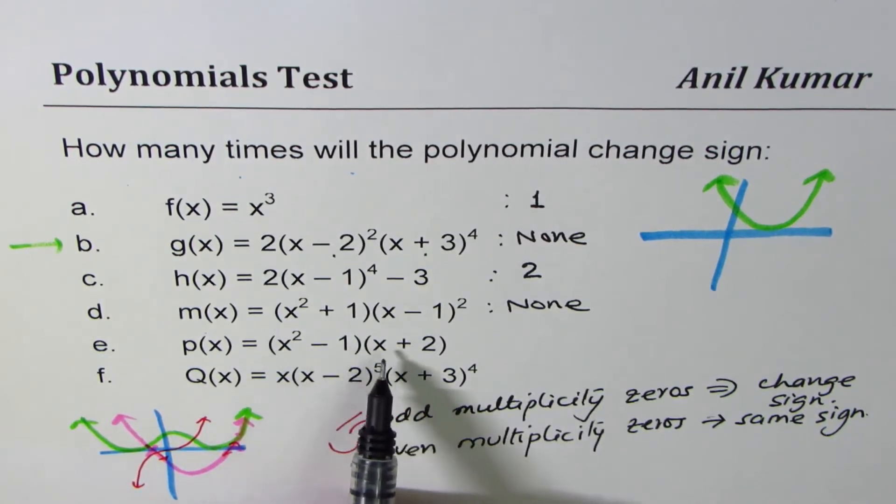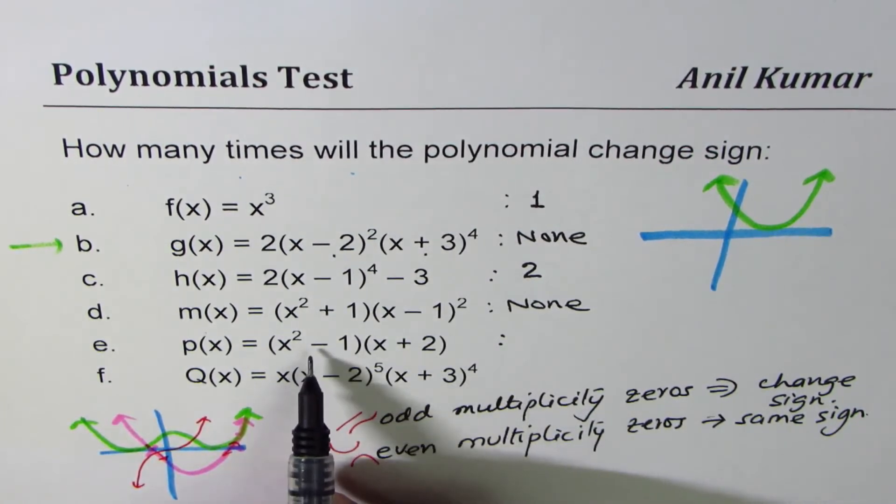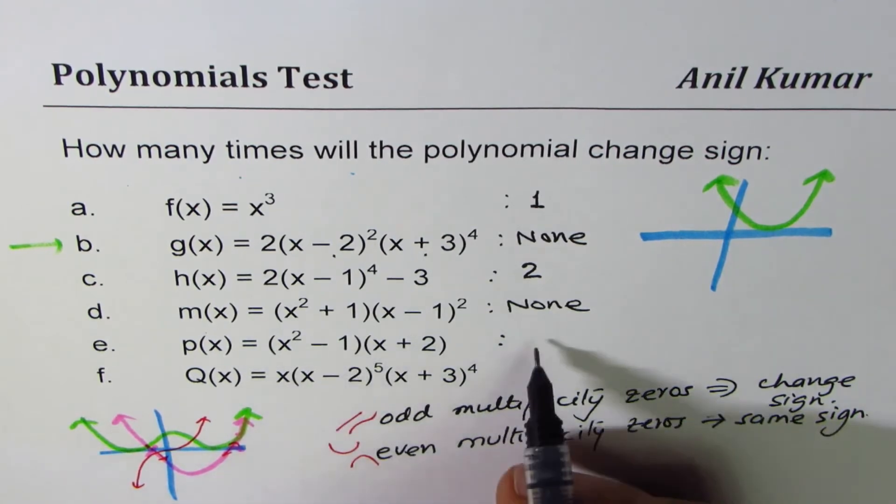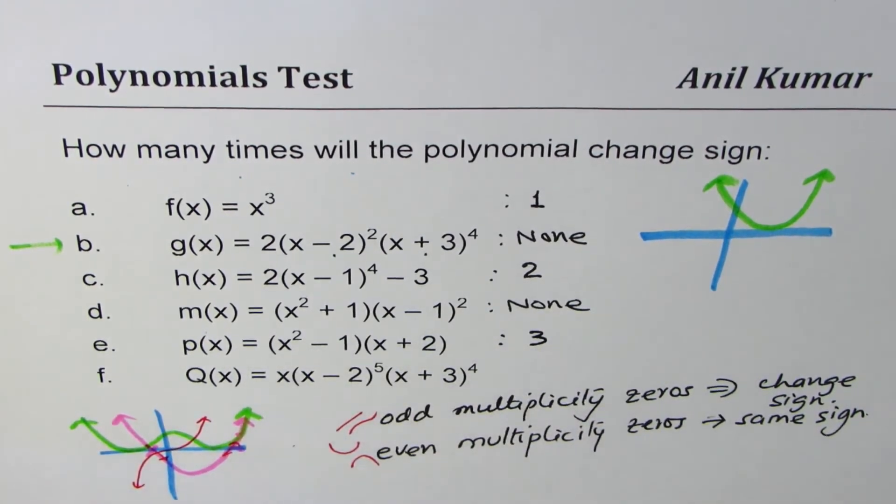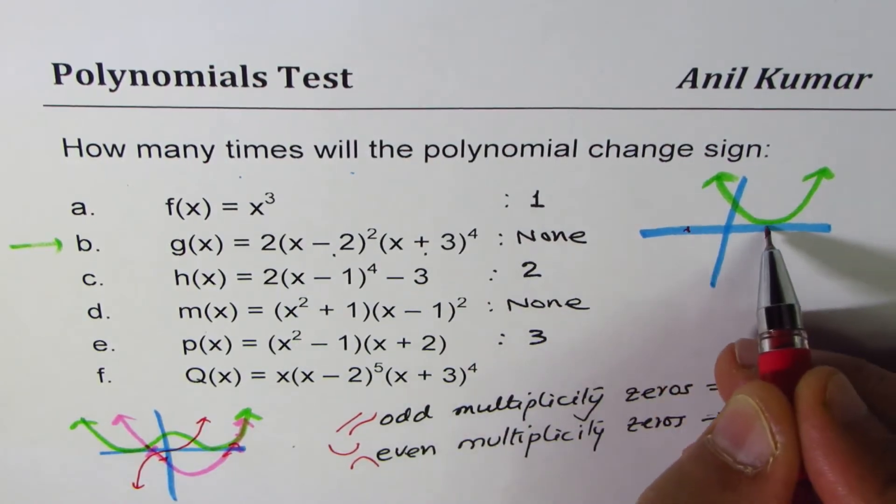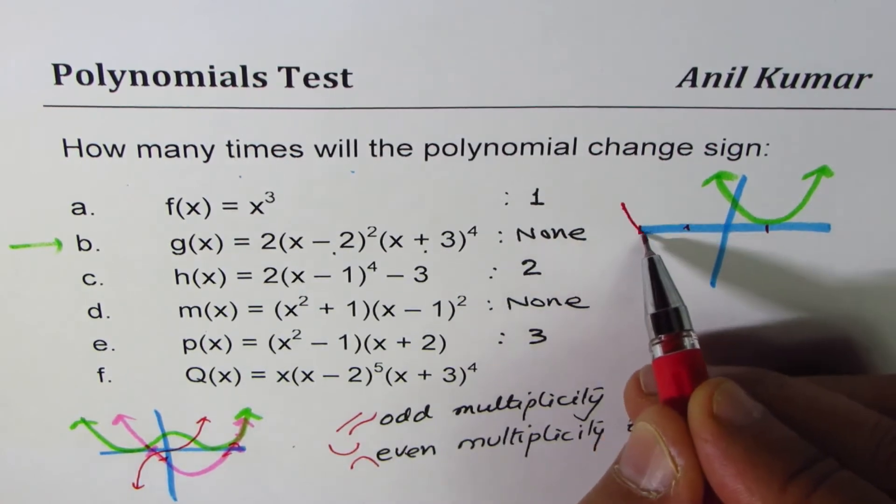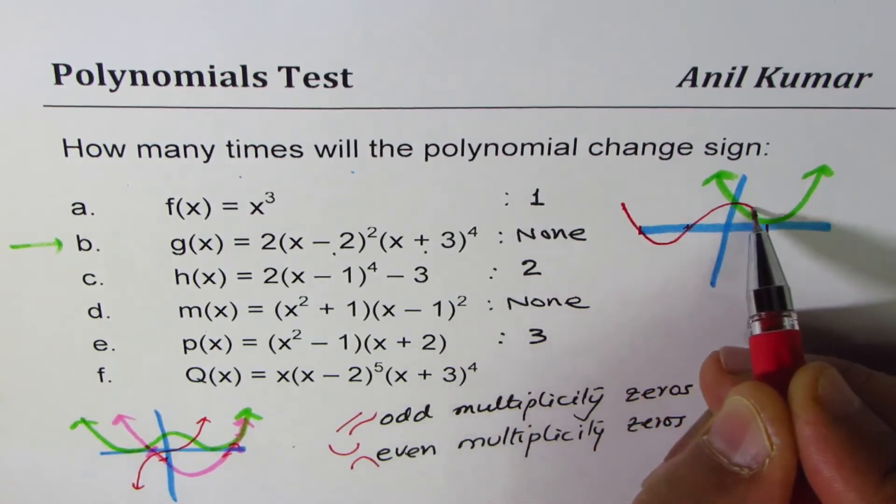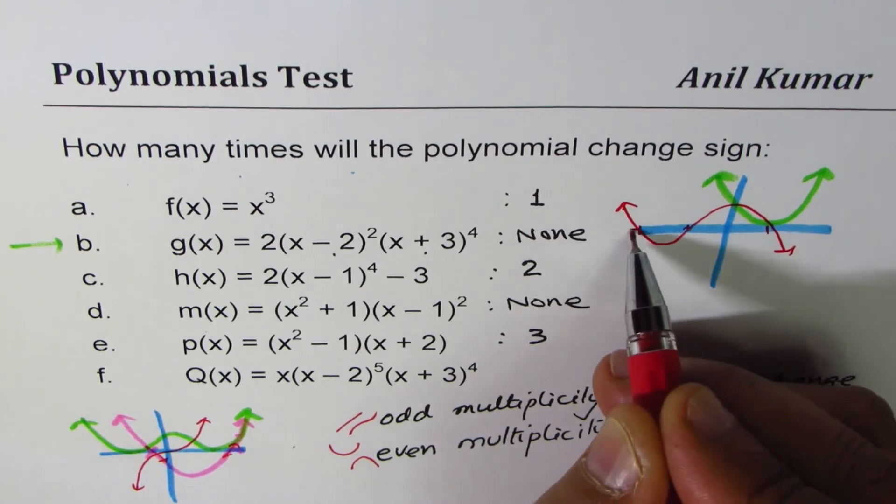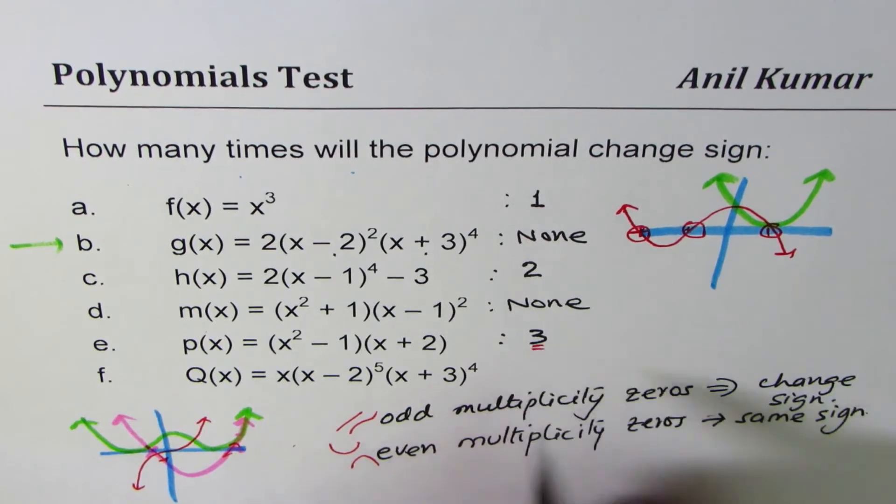(x² - 1)(x + 2) effectively are three zeros, all odd linear. So this is going to change the sign three times. If you sketch this function, x² - 1 has two zeros, one at +1, the other at -1, and then we have at -2. Leading coefficient is positive so the graph will be kind of like this. As you can see it changes sign once, twice, and then three times.